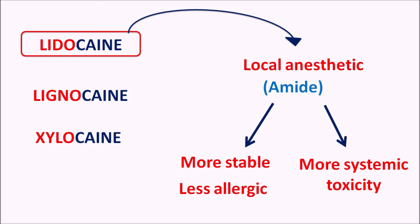Sometimes, in order to increase its local action, lidocaine is combined with vasoconstrictors such as epinephrine. Lidocaine can also be used as a class 1b antiarrhythmic agent and it can be used to terminate ventricular tachycardia. In this video we are going to see how lidocaine acts as a local anesthetic, what are the important precautions, side effects, dosage forms — all these things will be discussed.